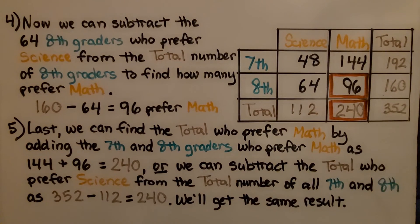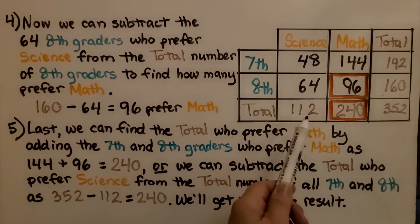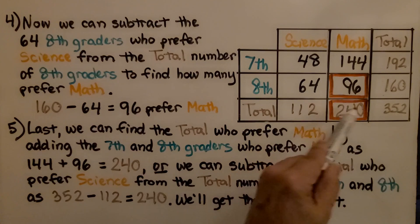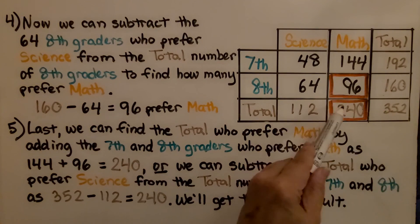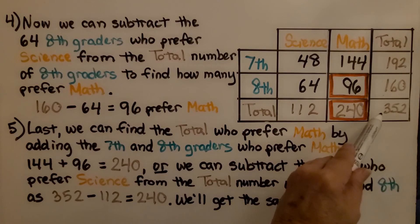So you can complete a frequency table by using the given data and using addition or subtraction. Just make sure that your numbers make sense that 112 plus 240 is equal to 352.